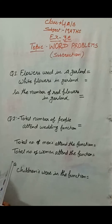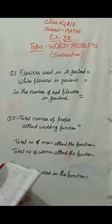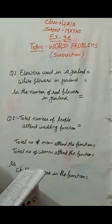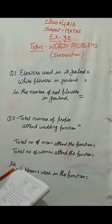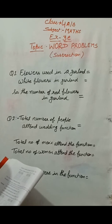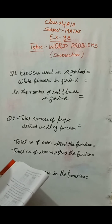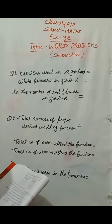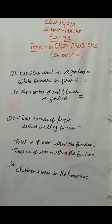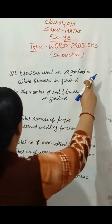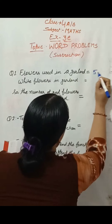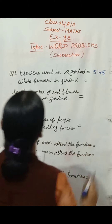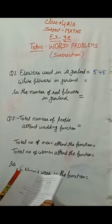Deepa sells flower garlands outside a temple. She used red and white flowers in each garland. If each garland has 545 flowers, out of which 289 are white, then how many red flowers did Deepa use in each garland? Flowers used in garland is 545 and white flowers in garland is 289.